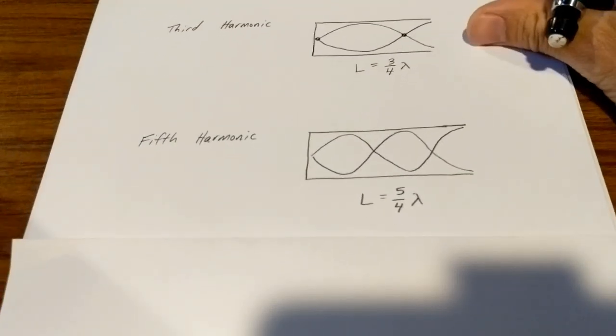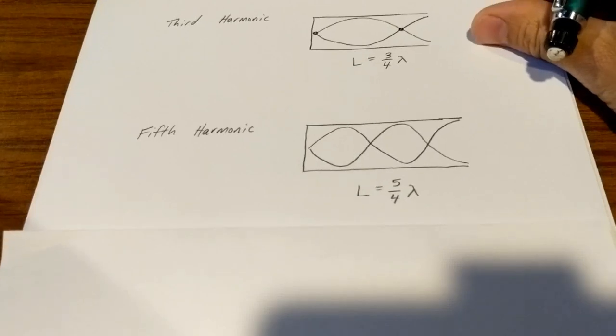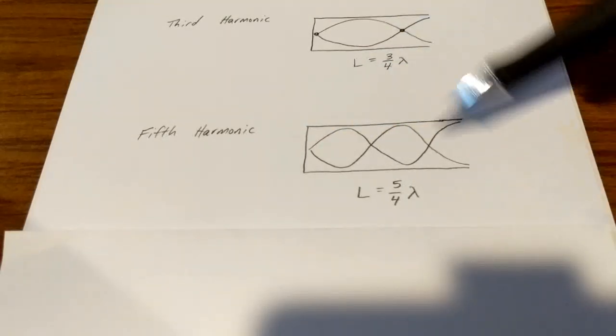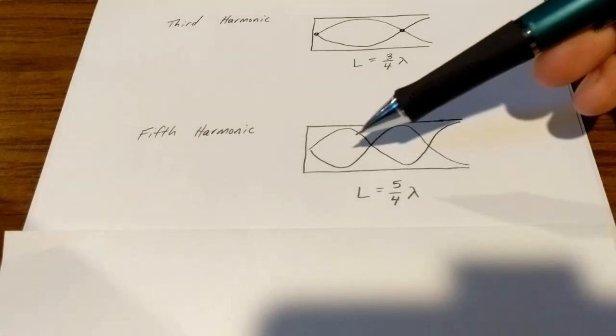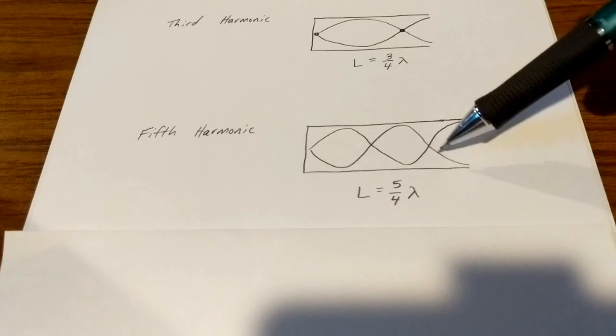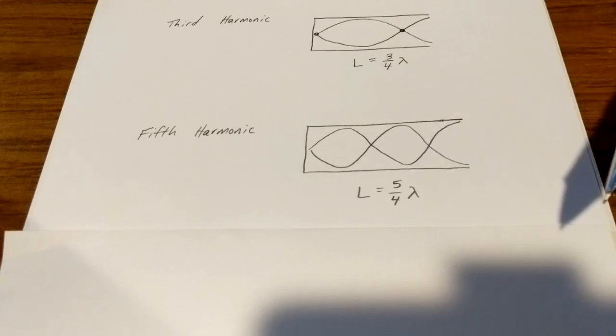Finally, I've sketched out the fifth harmonic, and there's not much more to say here. This is again the closed-end, the open-end. Here are three nodes, or three places where the air molecules inside of the tube won't move at all, they don't oscillate at all. They stay at equilibrium the entire time.